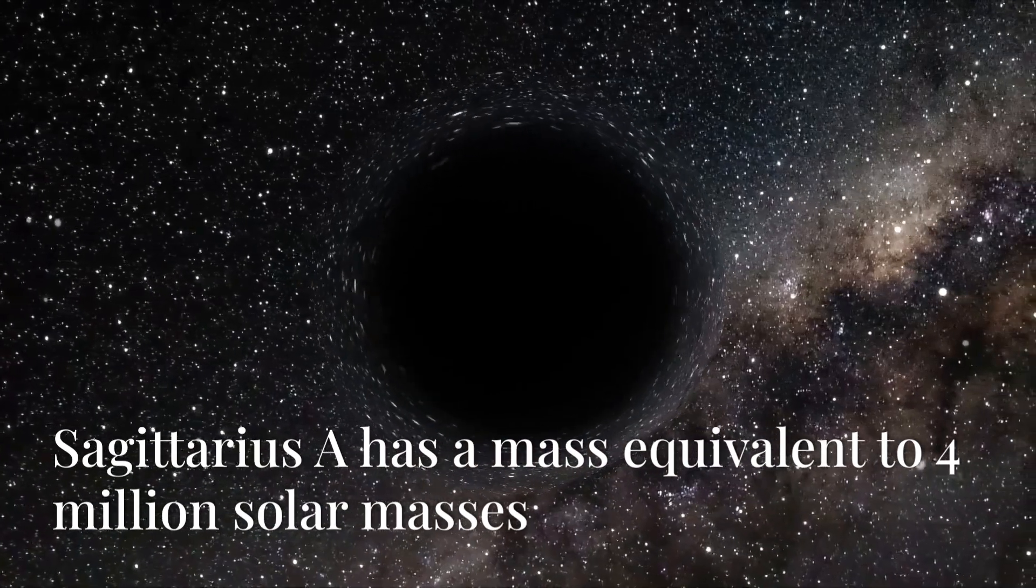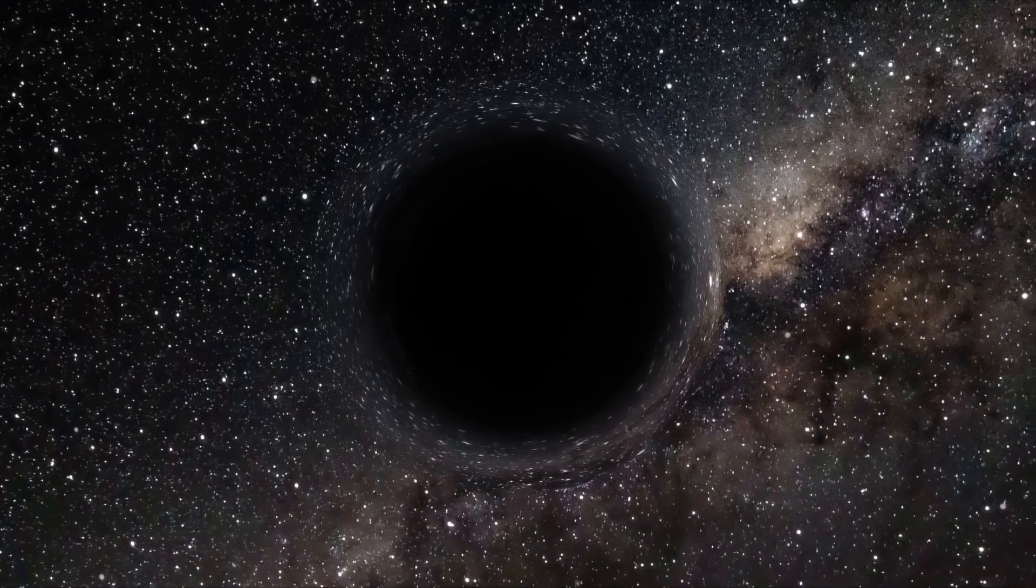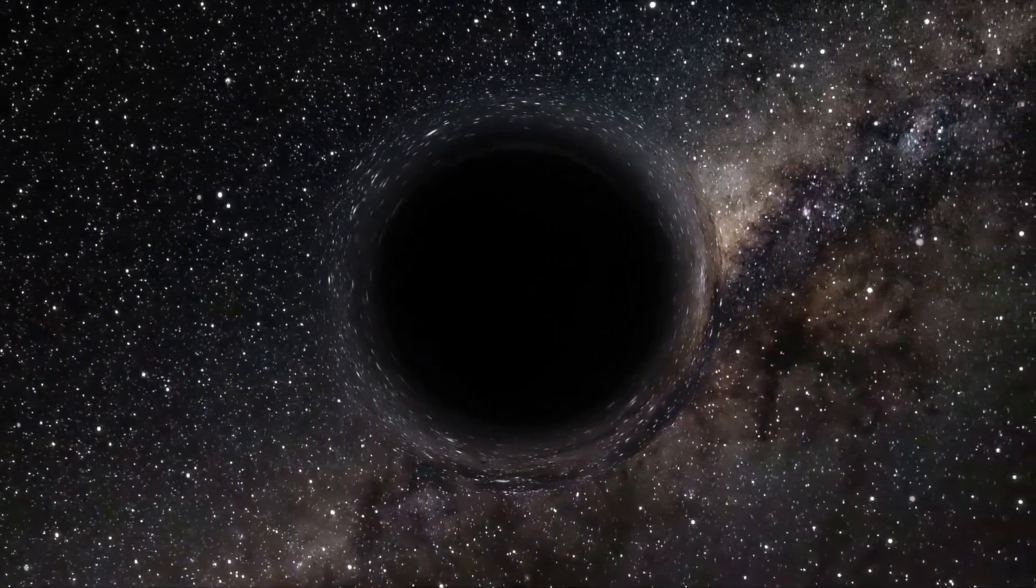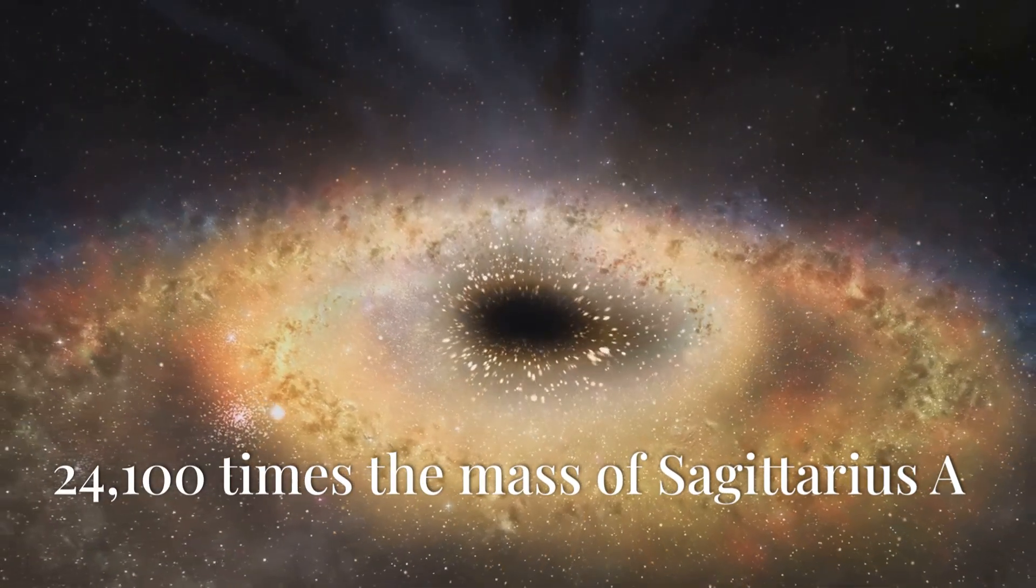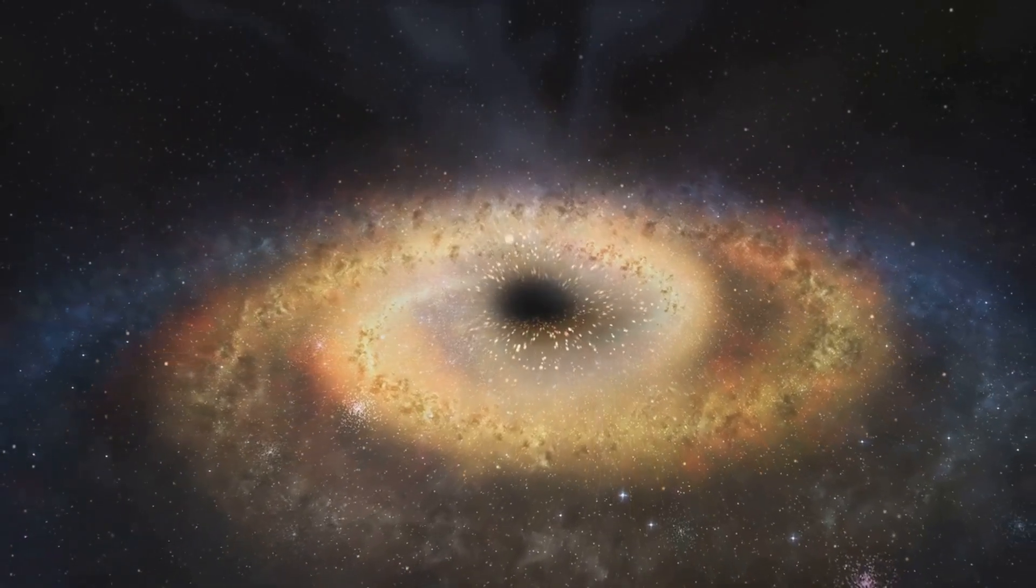To give you some perspective, the black hole at the centre of our Milky Way, known as Sagittarius A, has a mass of about 4 million solar masses. What about Phoenix A? It's packing 24,100 times the mass of Sagittarius A.